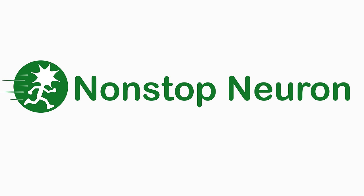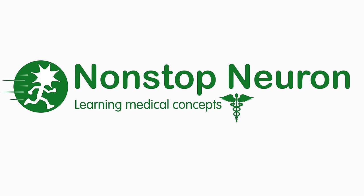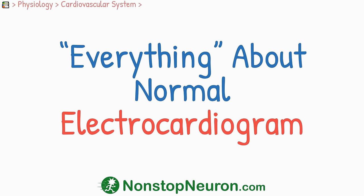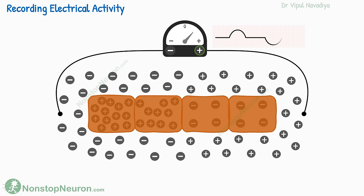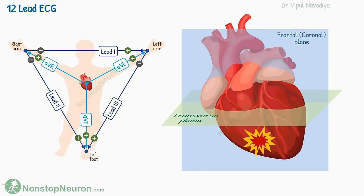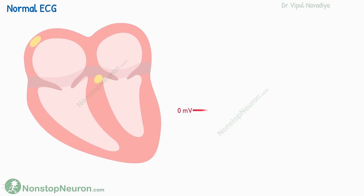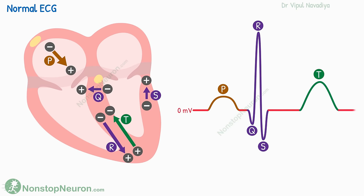Welcome to NonstopNeuron.com, where learning medical concepts is as easy as watching cartoons. In the next 25 minutes, you will learn everything about the normal electrocardiogram, starting from the very basics of recording any electrical activity to how 12-lead ECG is obtained and how different waves on ECG are produced. The topic is presented in a step-by-step and easy-to-digest manner, so by the end, you will have no confusion regarding ECG.